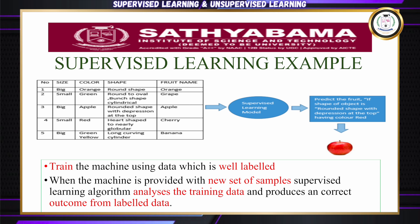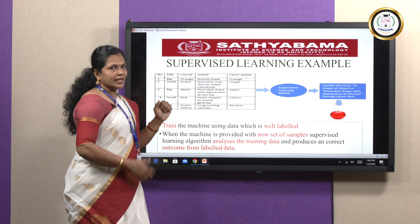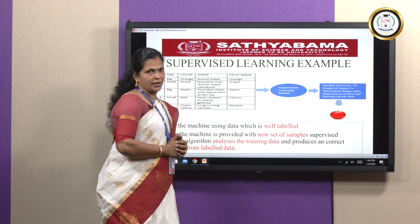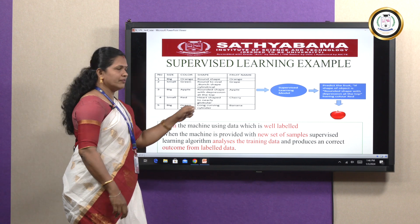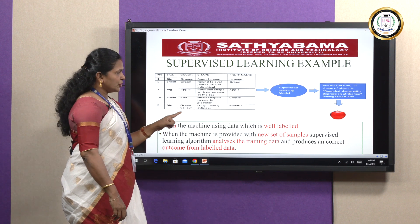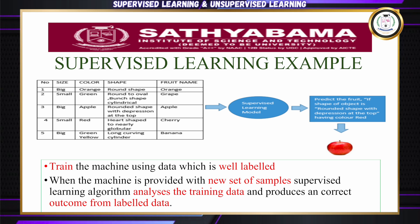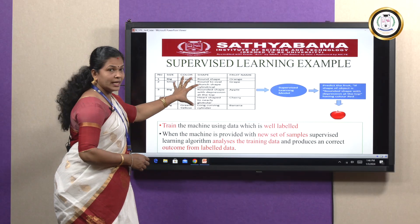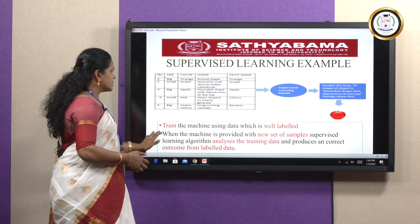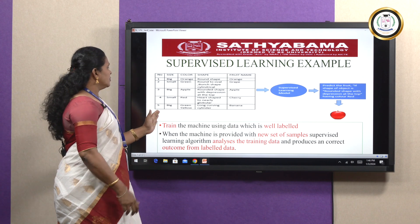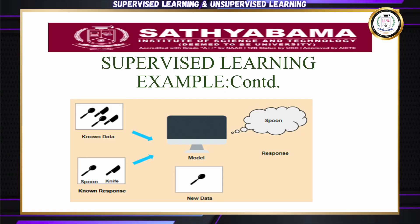For example, if the shape of an object is rounded with a depression at the top and the color is red, the model predicts the output as apple. We train the machine using well-labeled data. When the machine is provided with a new set of samples, the supervised learning algorithm analyzes the training data and produces a correct outcome.